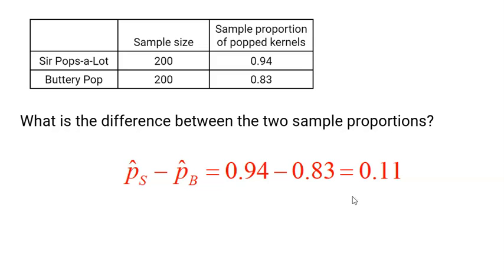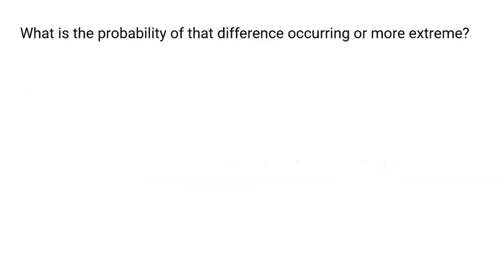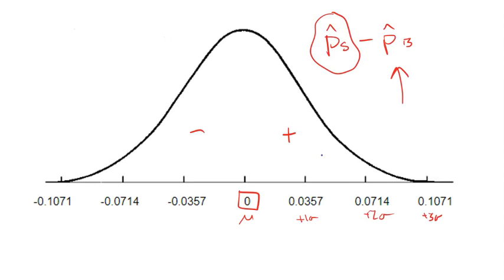Finally, it asks us what's the probability of that difference occurring or more extreme? So we saw a difference of 11%. Now, this is where we can actually go back to this nice picture. 11% is somewhere over here. An 11% difference. Remember, that was 0.94. Sir Pops-a-Lot was bigger. Buttery Pops was 0.83. That was an 11% bigger. Sir Pops-a-Lot was 11% bigger. 11% is somewhere over here. Very, very high.